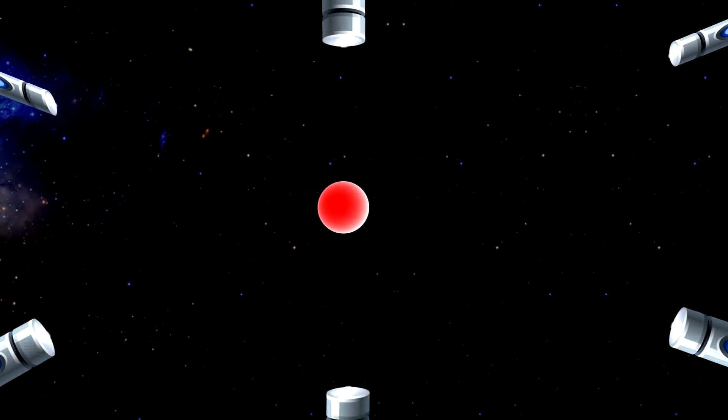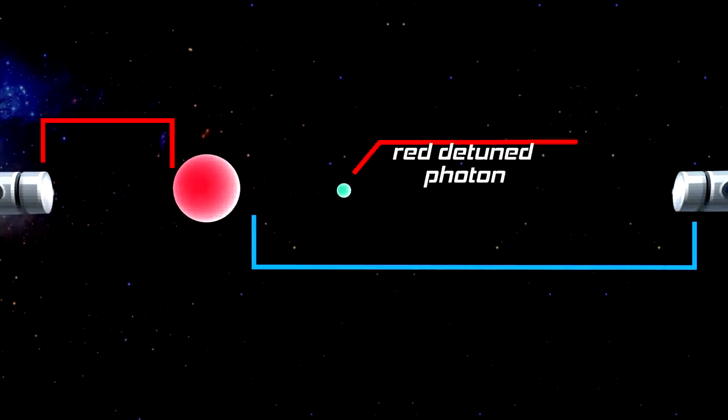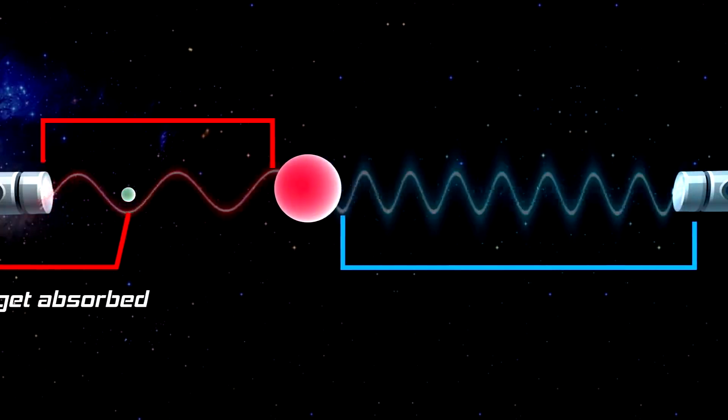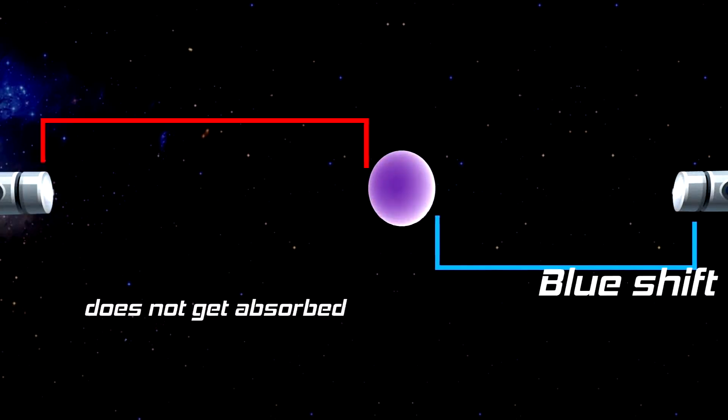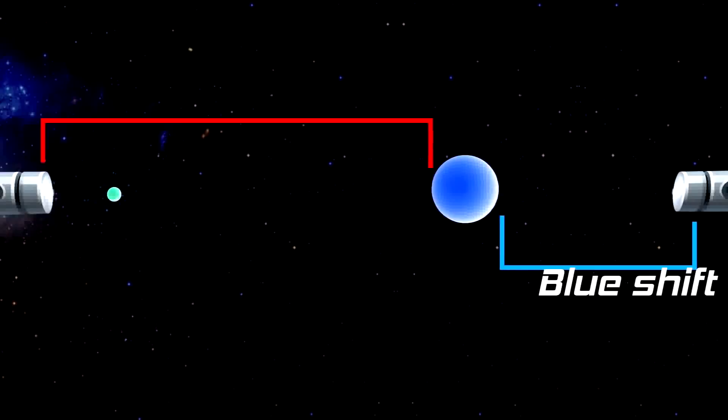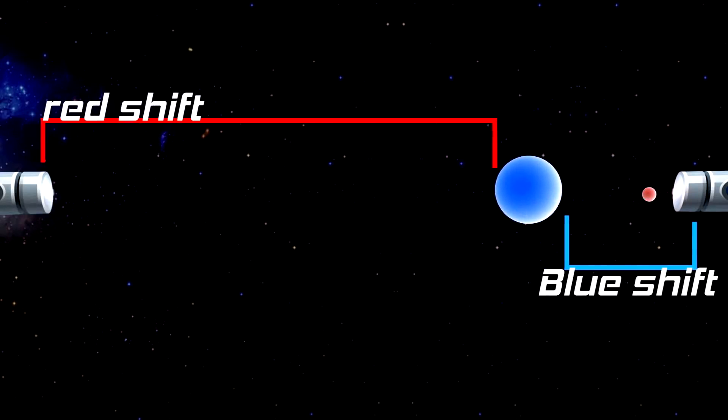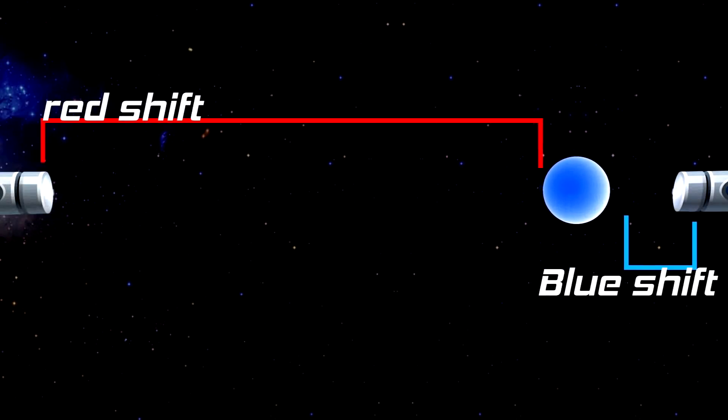To laser cool a tiny sample of atoms, six laser guns are placed at 90 degrees to one another around it. The atom absorbs the red detuned photon coming towards it due to blue shifting and fails to absorb the photon from which the atom is moving away due to red shifting. Many such collisions slow down the atoms gradually and the sample gets cooled.